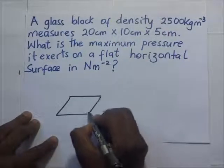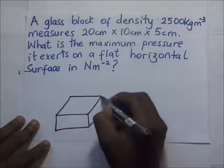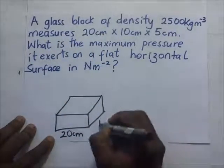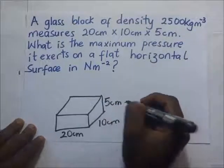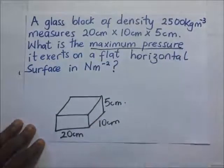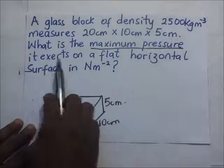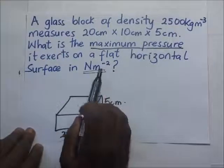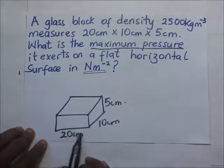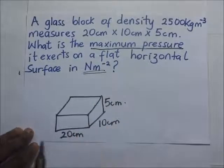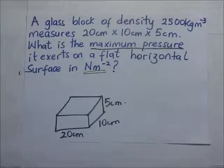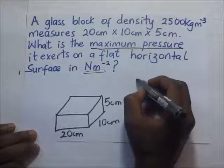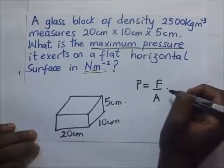This is our glass block, having dimensions of 20 cm by 10 cm by 5 cm. They are asking us to find the maximum pressure it exerts on a flat horizontal surface in newtons per meter squared. Since the answer is required in newtons per meter squared, which is the SI unit, our force must be in newtons and our area in meters squared. The pressure formula for solids is P = F divided by A.